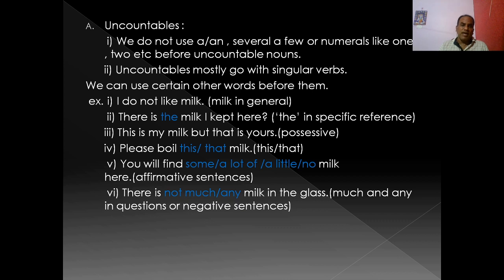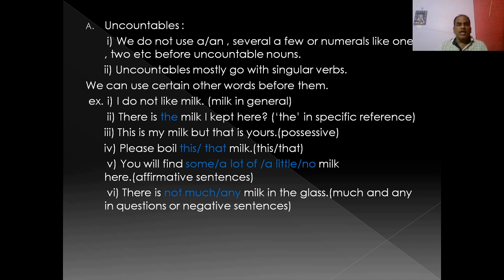We can use certain words before uncountable nouns. 'I do not like milk' — milk is taken as general, so no determiner is needed. 'There is the milk I kept here' — the definite article 'the' can be used in specific reference. 'This is my milk, but that is yours' — possessive pronouns can be used before uncountable nouns. 'Please boil this or that milk' — demonstratives like this, that, these, those can also be used.